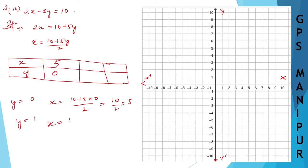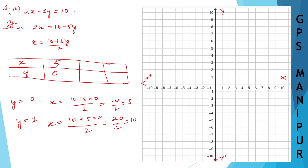We cannot take y equal to 1 because it will give a fraction. So let us take y equal to 2. Substituting: 10 plus 5 into 2, divided by 2 — that is 10 plus 10, which is 20, divided by 2, which is 10. So when y equals 2, x equals 10.